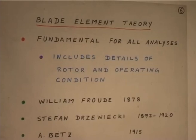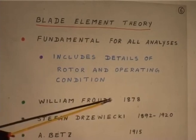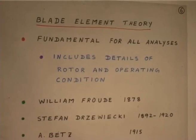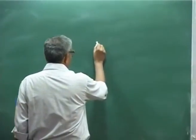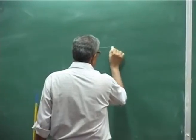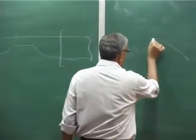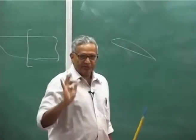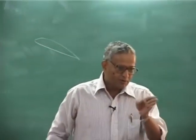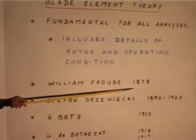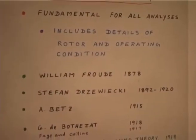To give you a brief history: it was proposed — basically started — by William Froude in 1878. Blade element theory essentially says that I am going to treat every cross section of the blade. The rotor blade is essentially — if you look at it — an aerofoil shape. He said, I am going to look at the cross section of the blade, which is an aerofoil. These were all before flight started, even the fixed wing.